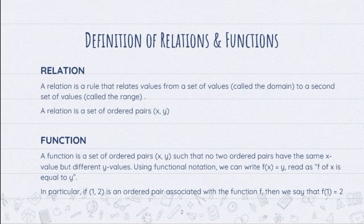A function is a set of ordered pairs (x, y) such that no two ordered pairs have the same x value but different y values. Using functional notation, we can write f(x) = y. In particular, if (1, 2) is an ordered pair associated with a function f, then we can say that f(1) = 2.